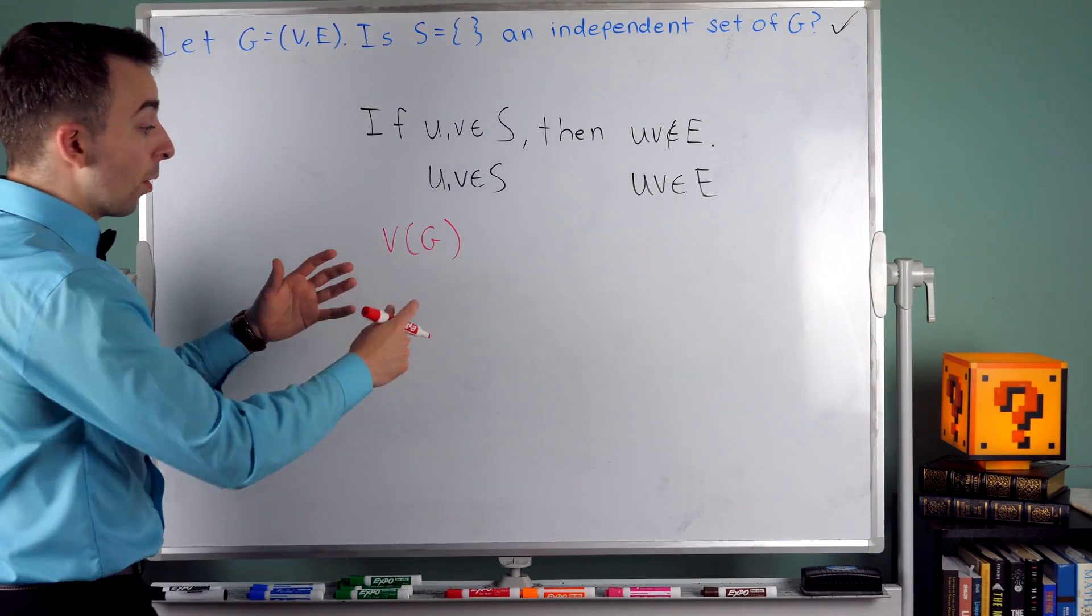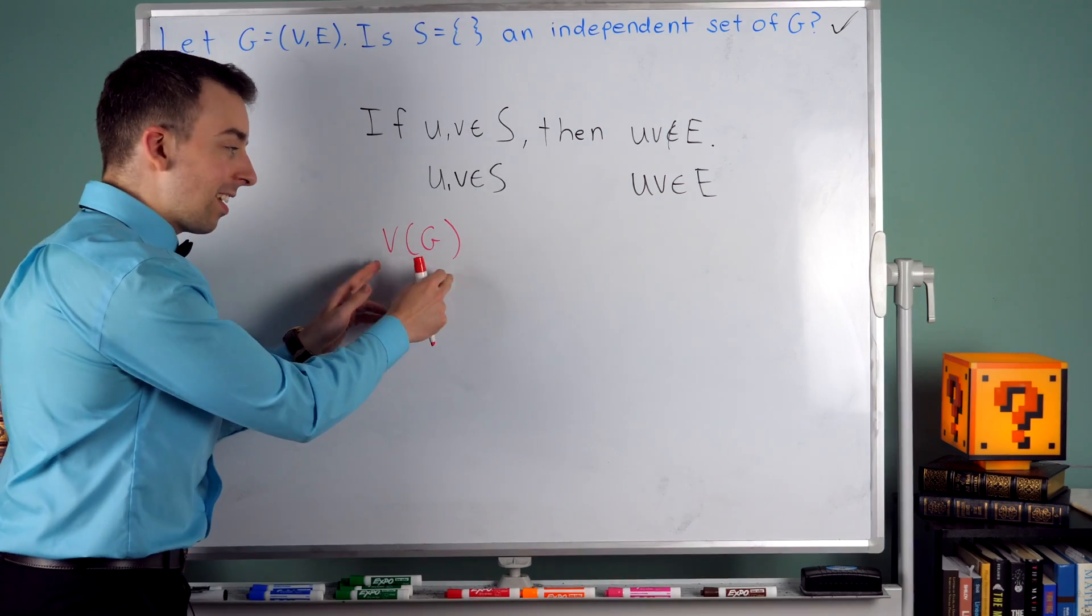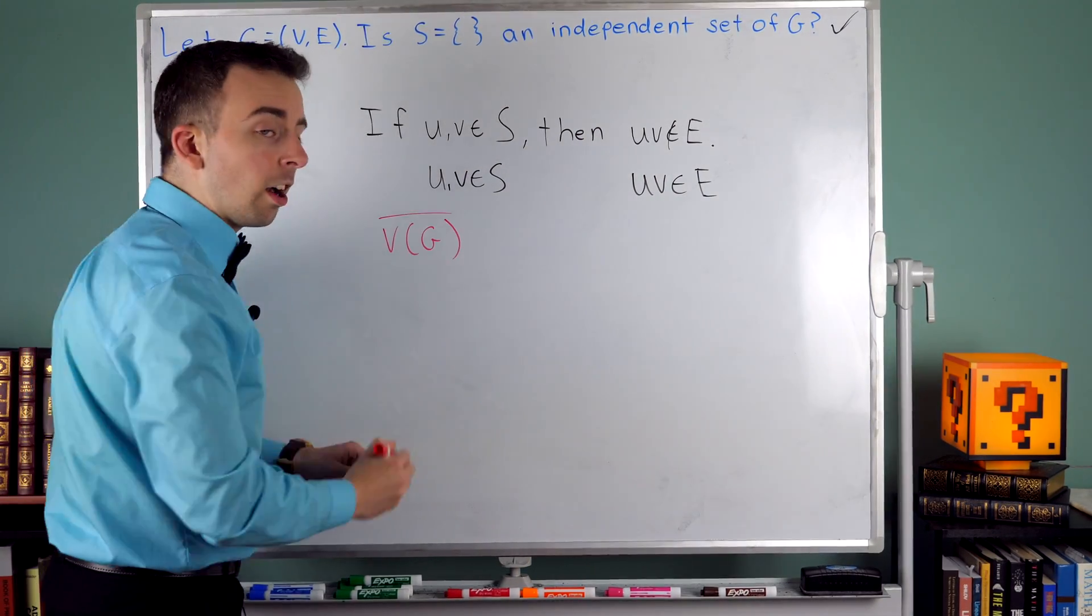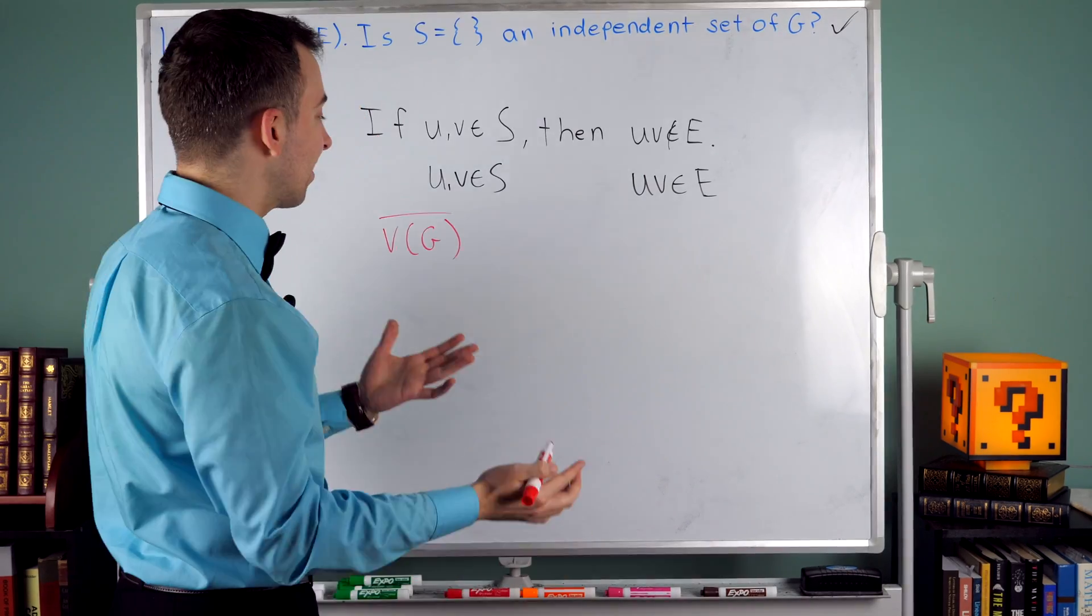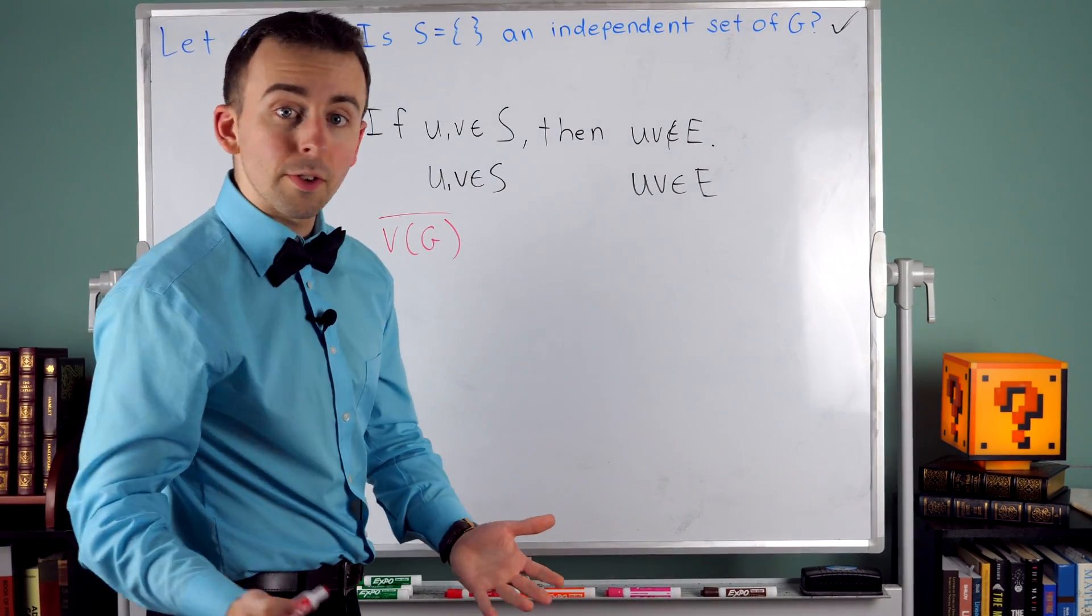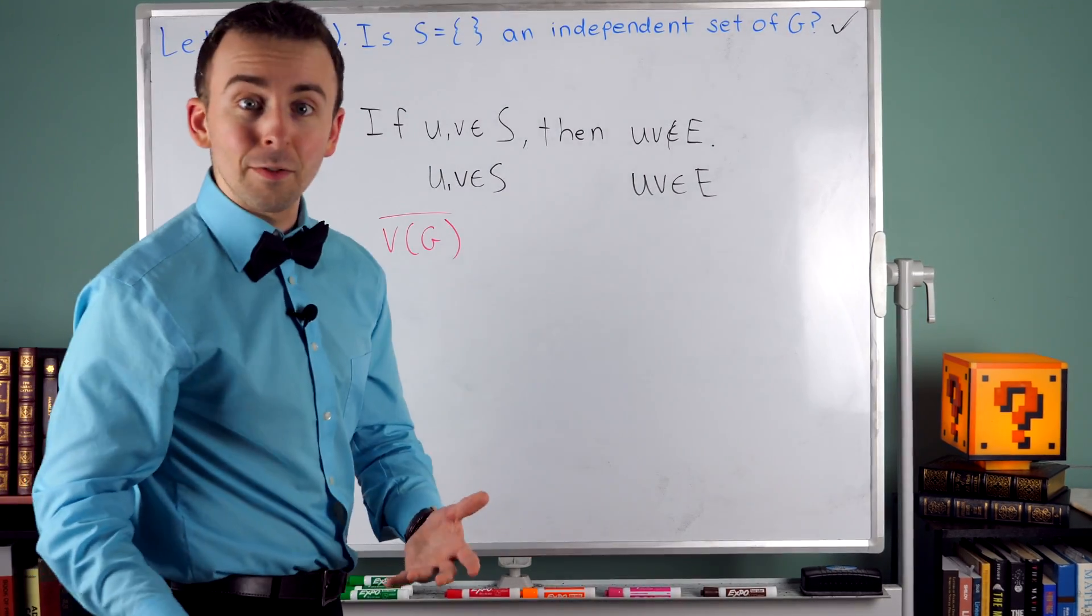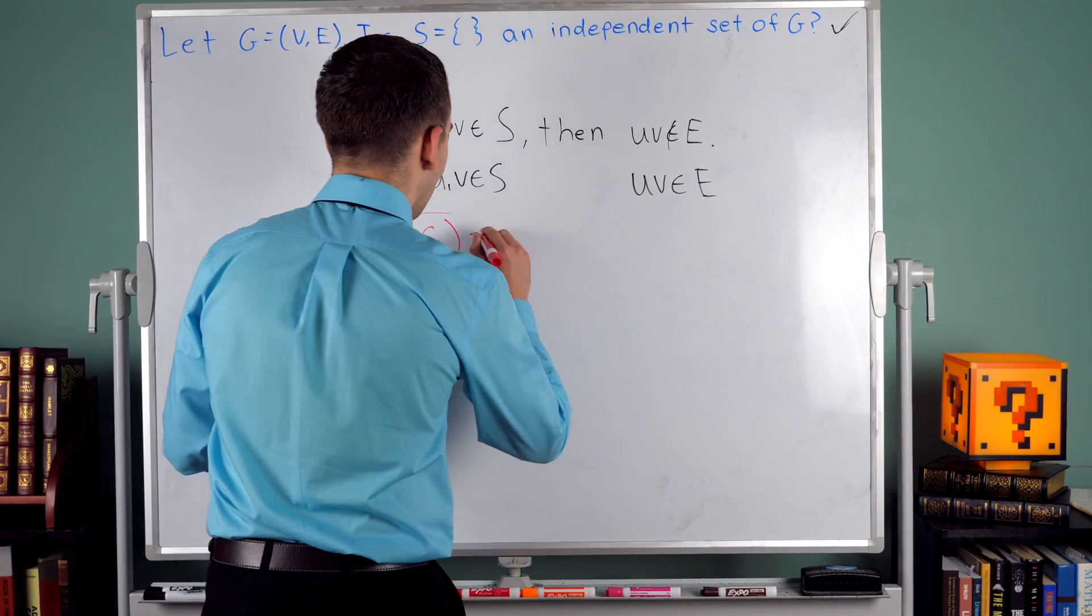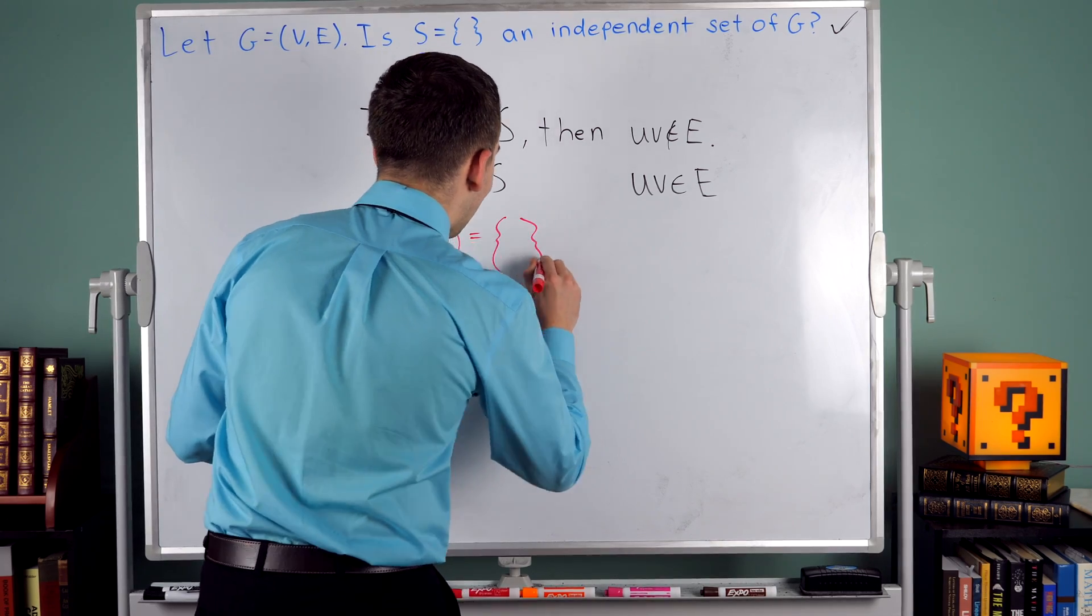But that would mean, we just said the vertex set of a graph is a vertex cover. What's the complement of the entire vertex set? Well, that's the set of all the vertices not in the vertex set. But by definition, every vertex is in the vertex set. So the complement would be the empty set.